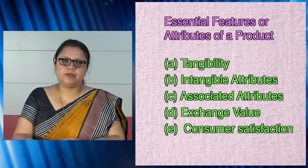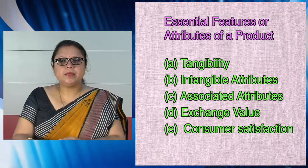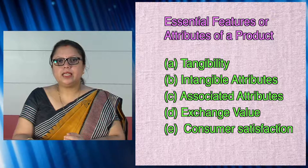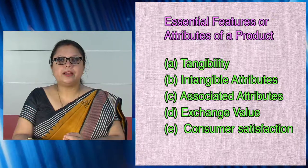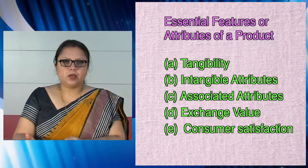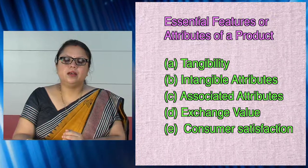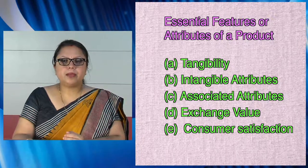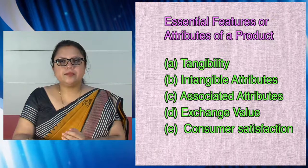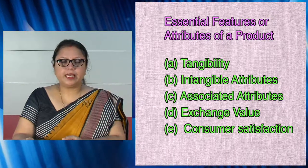Then comes exchange value. A product may be tangible or intangible but it must have exchange value — it must be capable of being exchanged between seller and buyer at a mutually agreed price. There should be a specific price for a specific product. Then comes consumer satisfaction: a product should have the capacity to satisfy the consumer's needs and wants, because if customers are satisfied, only then will they go to purchase the product again and again.